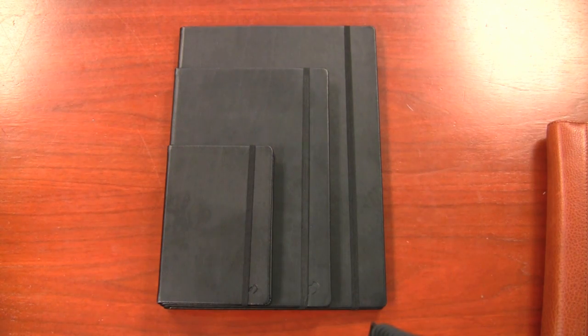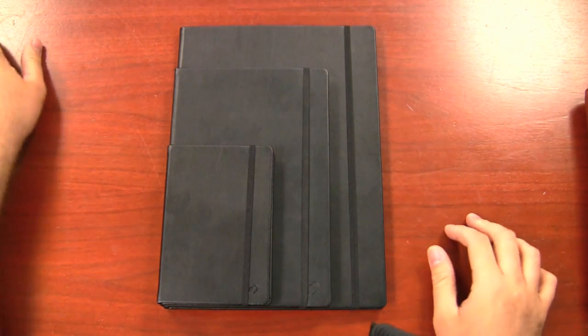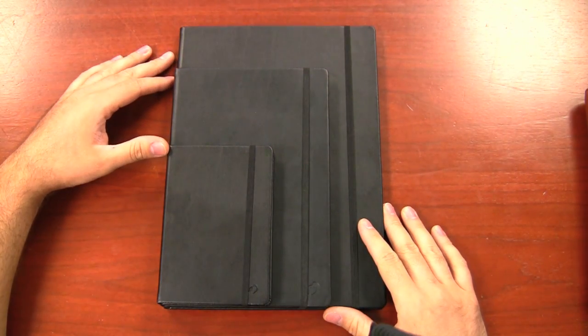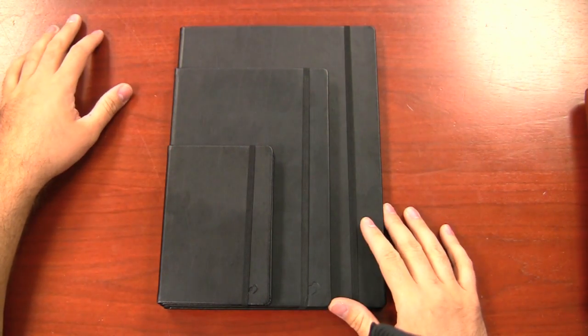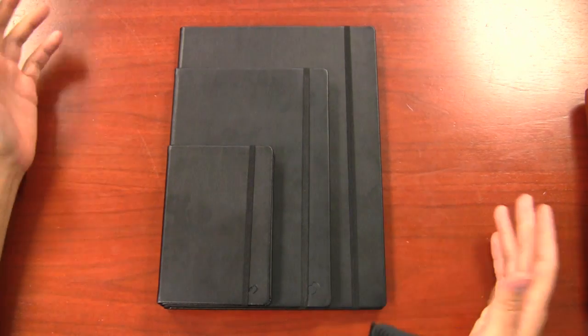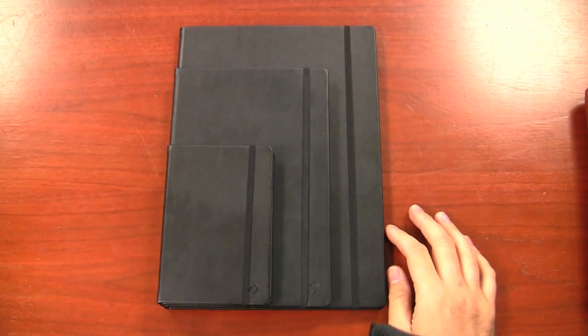Here we are checking out the three current sizes available with the Quo Vadis Havana. These are the new Havanas, the ones with the 85 gram paper. This video is as of April 2012.